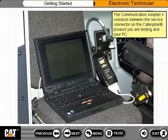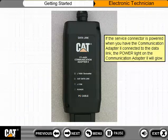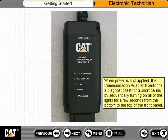The Communication Adapter 2 connects between the service connector on the Caterpillar product you are testing and your PC. If the service connector is powered when you have the Communication Adapter 2 connected to the data link, the power light on the Communication Adapter 2 will glow. When power is first applied, the Communication Adapter 2 performs a diagnostic test by sequentially turning on all of the lights from the bottom to the top of the front panel for a few seconds.